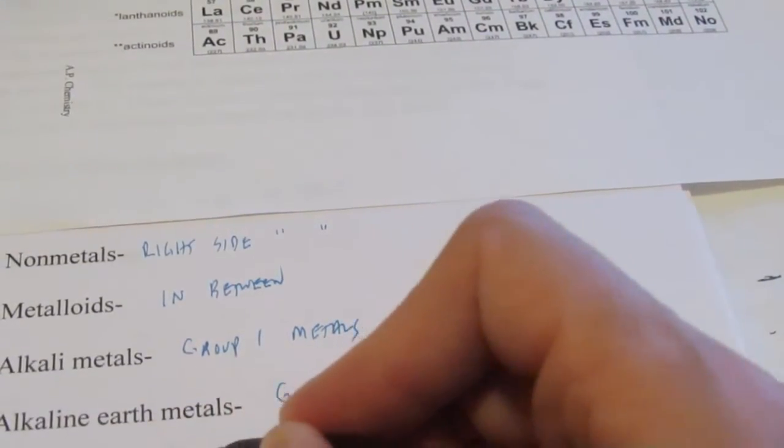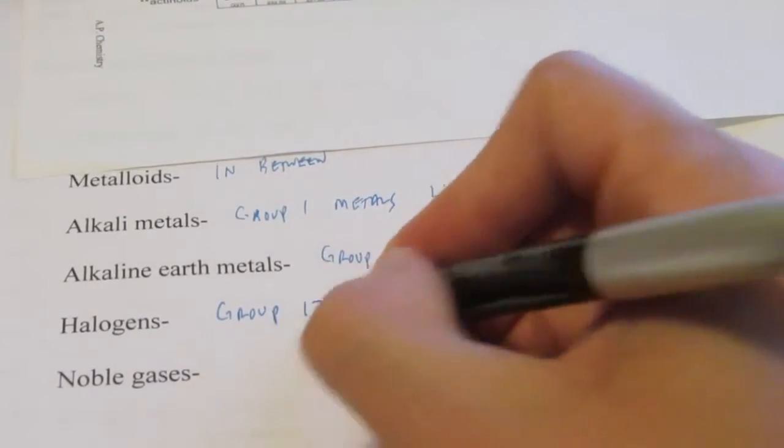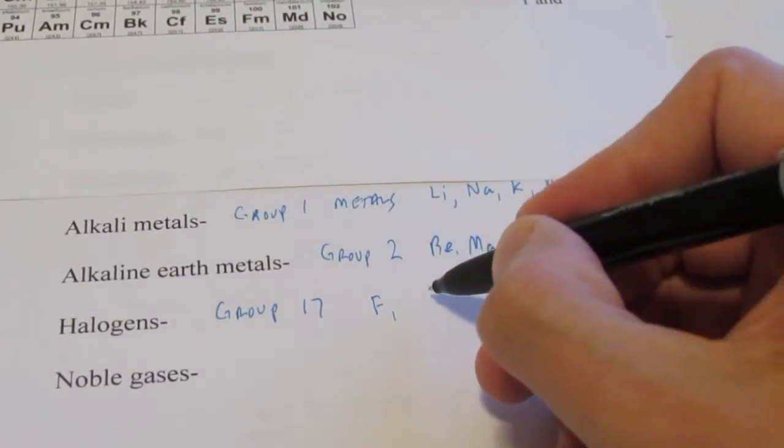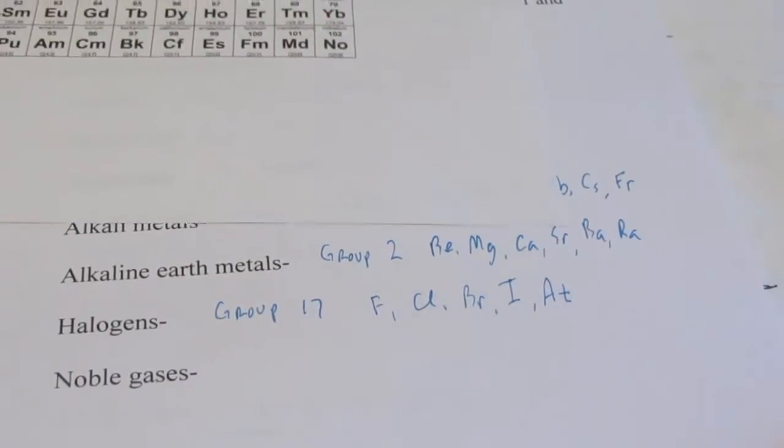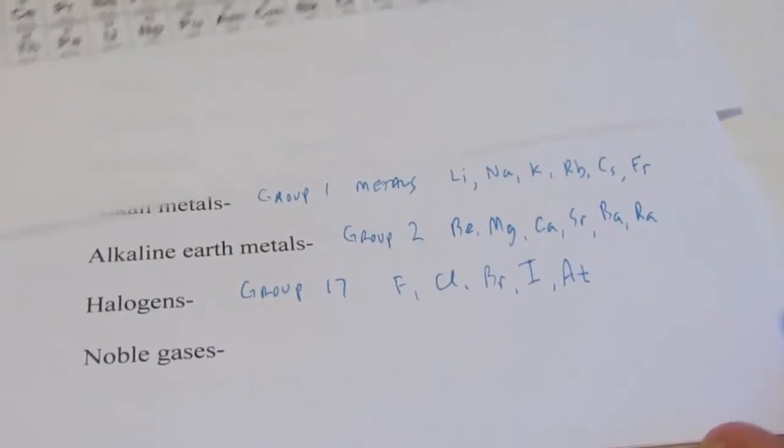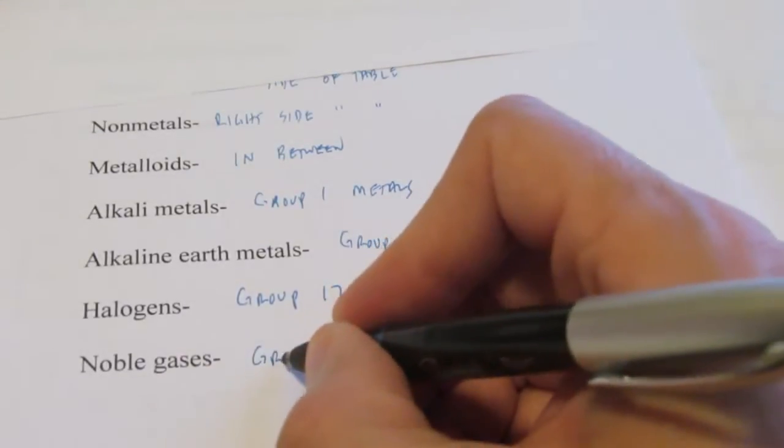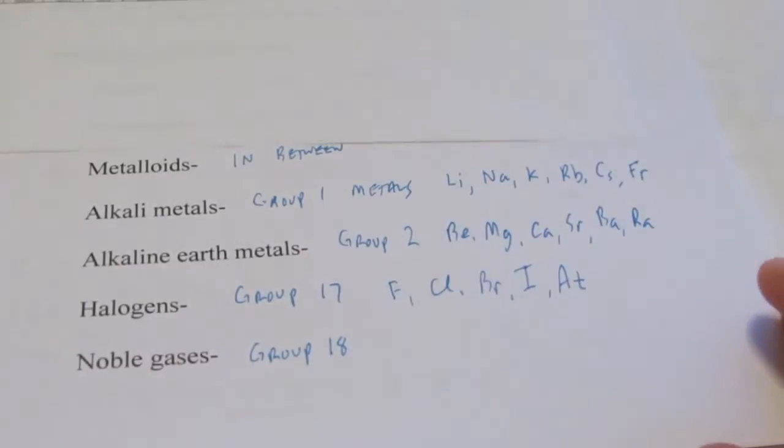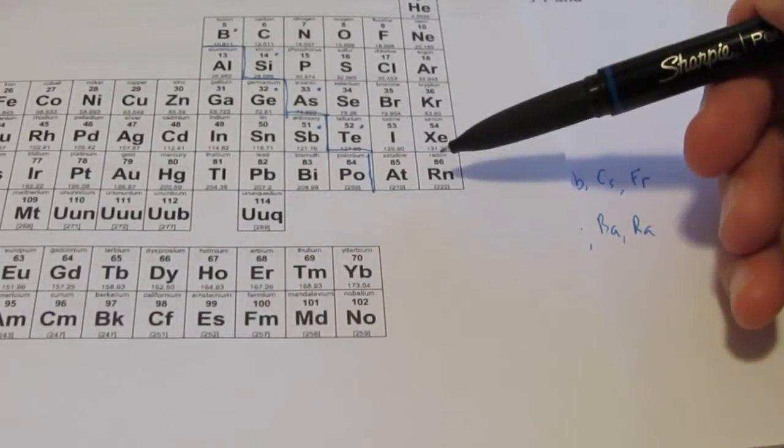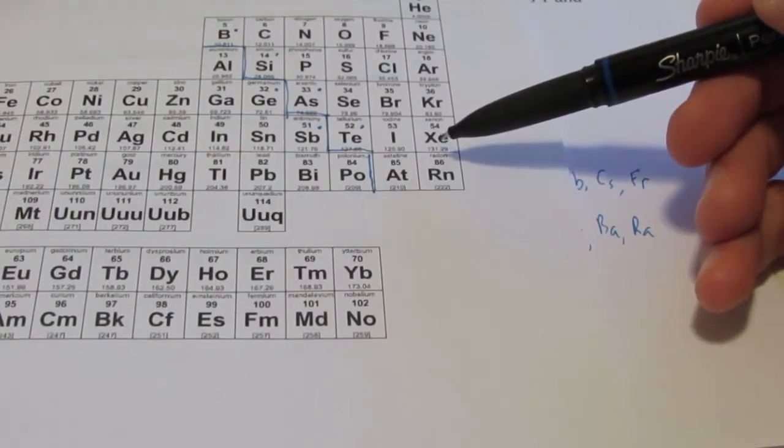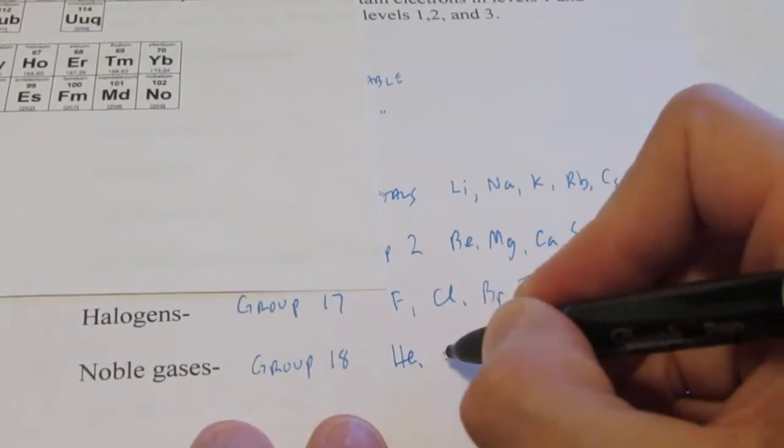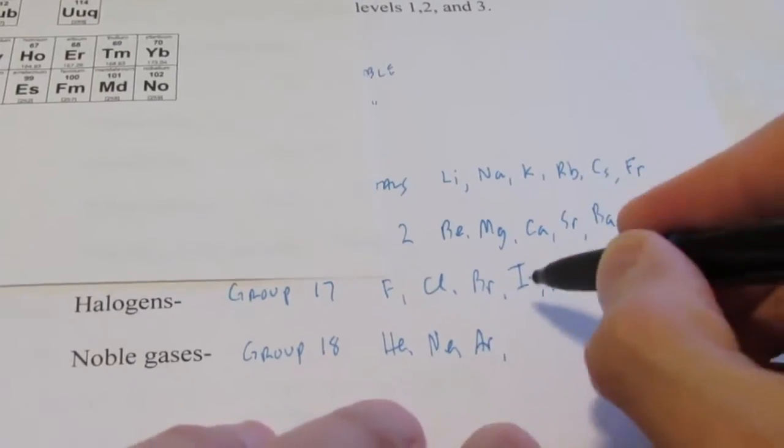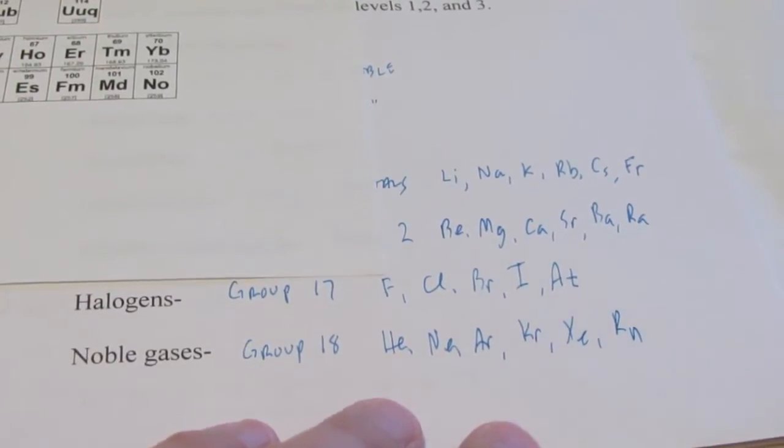The halogens belong in group number 17, and they would include fluorine, chlorine, bromine, iodine, and astatine. And we had already mentioned the noble gases. They are members of group 18 and they react with literally nothing at all. Now it is true that some of the heavier noble gases, we can get to react with fluorine at high temperatures, but it's unusual that these elements will react with anything at all. They are helium, neon, argon, krypton, xenon, and radon.